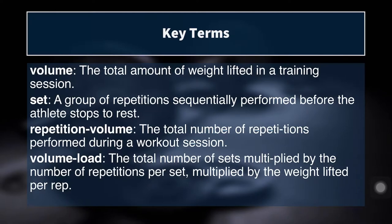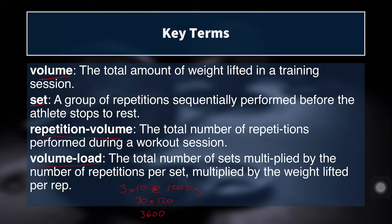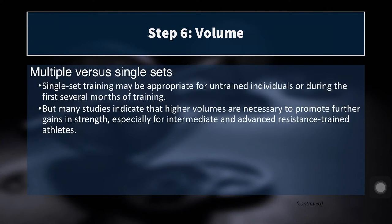Some key terms to review: volume is the amount of weight lifted in a training session. A set is a group of repetitions performed sequentially without rest. Repetition volume is the total number of repetitions performed during a workout, and volume load is the total number of sets multiplied by the number of repetitions per set multiplied by the weight lifted. So if you lifted three sets of 10 on the back squat at 120 kilograms, your volume load would be 30 times 120 — three thousand six hundred kilograms — for that workout.